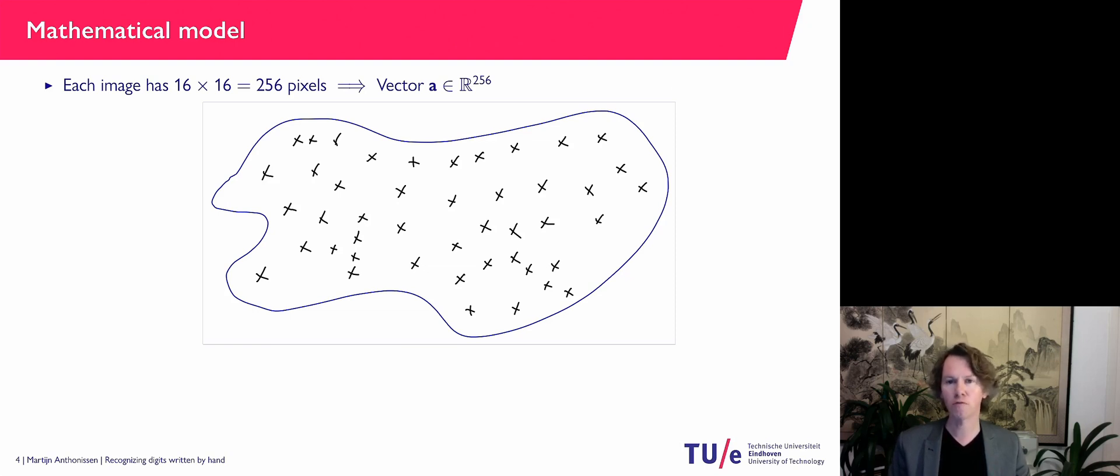So every black cross is a vector in R^256 and it corresponds to a manually classified digit. So for every black cross we know which digit is in there.